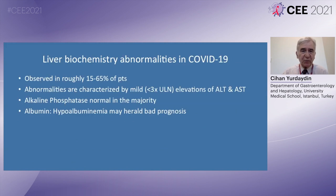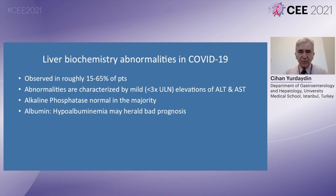Liver biochemistry abnormalities are observed in roughly 15 to 65 percent of patients, and these abnormalities are characterized by small elevations of ALT and AST — less than three times, and mostly less than two times the upper limit of normal. Hypoalbuminemia in the long term may have a worse prognosis.